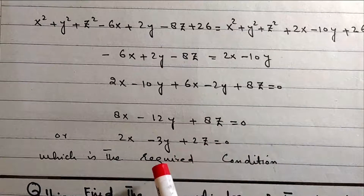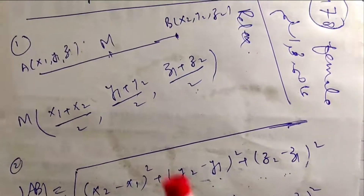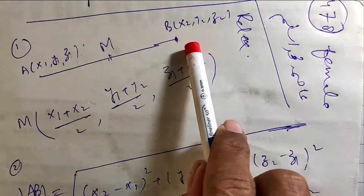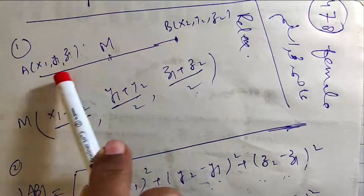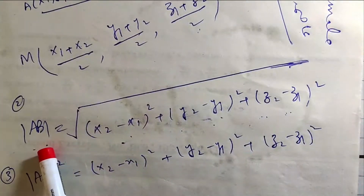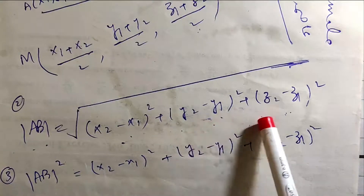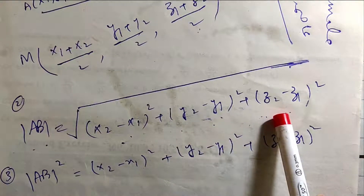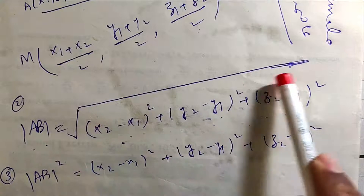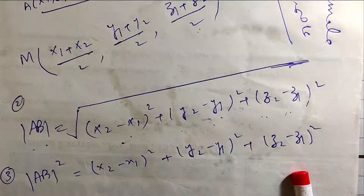Midpoint from A and P: take A and P, add first coordinates and divide by 2, add second coordinates and divide by 2, add third coordinates and divide by 2. The direction involves x2 minus x1, plus y2 minus y1, plus z2 minus z1.